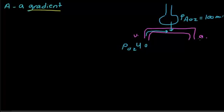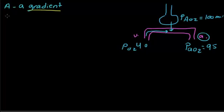So you have 40 mmHg in the venous side mixing with 100 mmHg from the alveoli. As a result, the partial pressure of O2 in the arterial system will be around 95 mmHg. So comparing alveolar O2 (100) minus arterial O2 (95), the normal A-a gradient is 5.